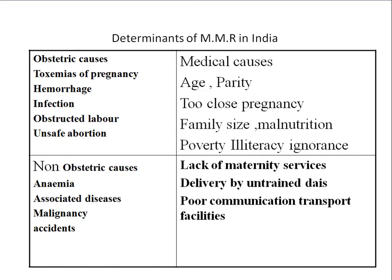The second major obstetric cause is hemorrhage. If the mother is anemic, she is prone to postpartum hemorrhage. Primary hemorrhage is due to injuries at the time of delivery, and secondary hemorrhage is due to infections. In India, the main causes of anemia are malaria and parasitic infestations.